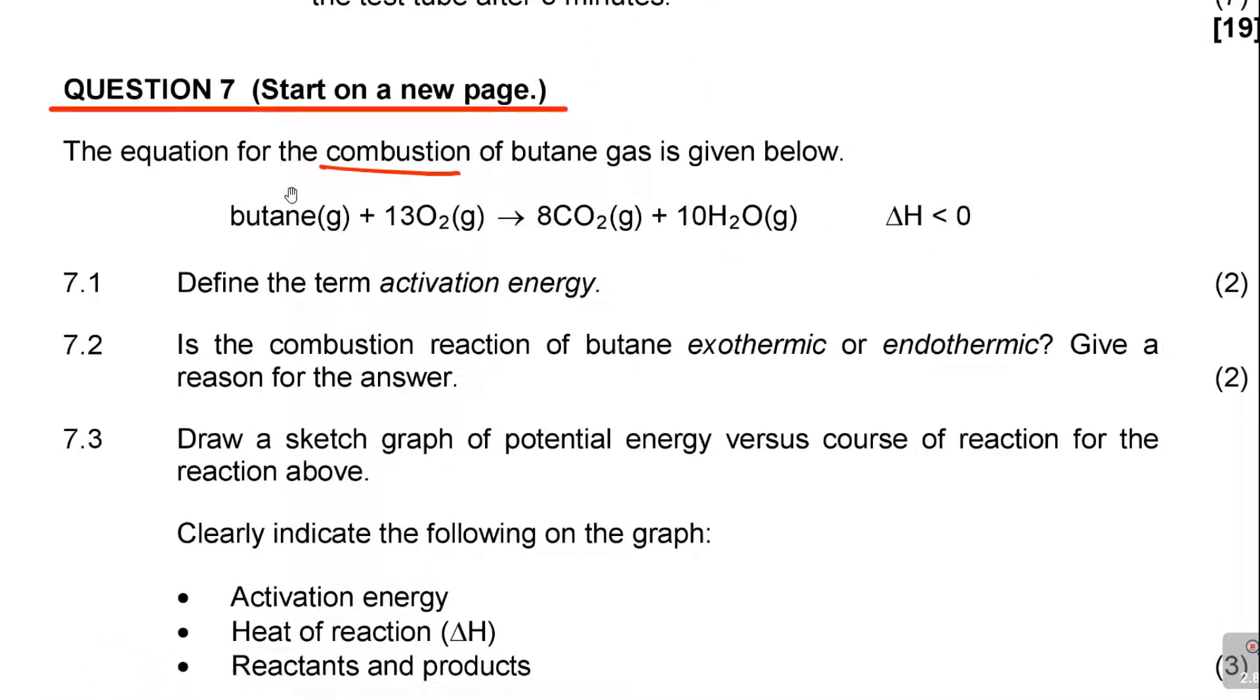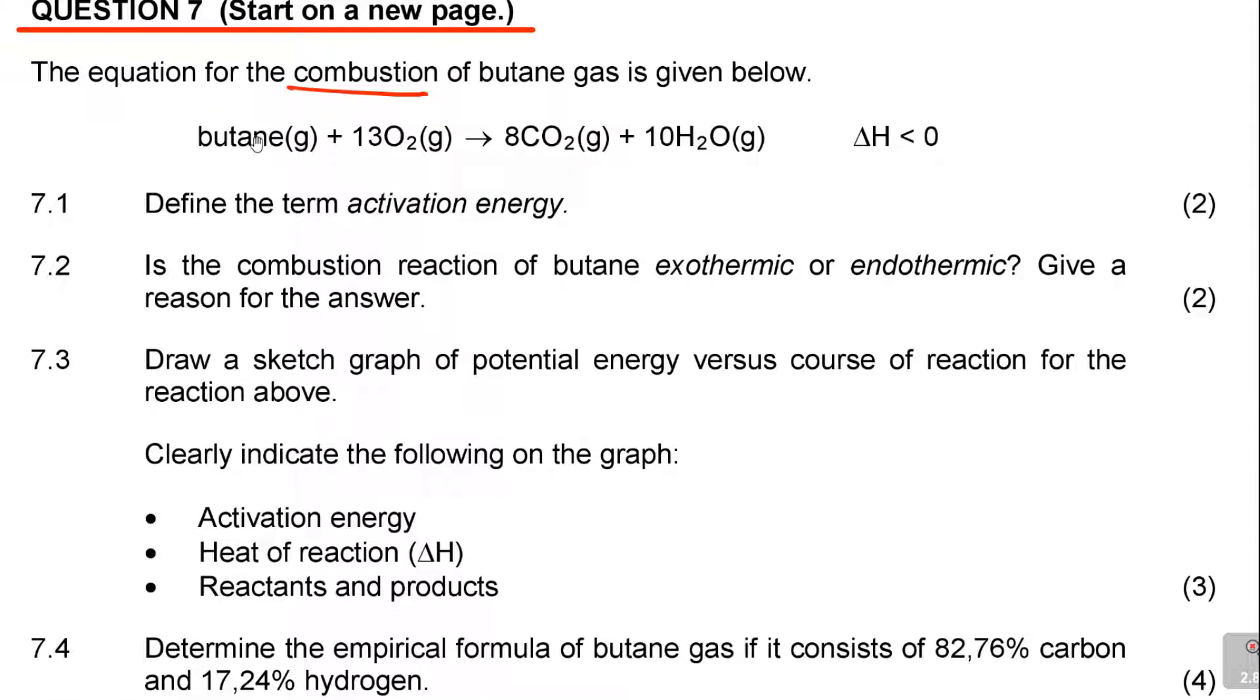The combustion of butane. For now they didn't want to bring it to you, but in grade 12 you'll be needing to know that structure. The equation for the combustion of butane is given below. Just out of interest, butane is C4H2N plus 2, which is 12 if I'm not mistaken. This is the butane, so this plus oxygen is equal to carbon dioxide plus water, then delta H is less.